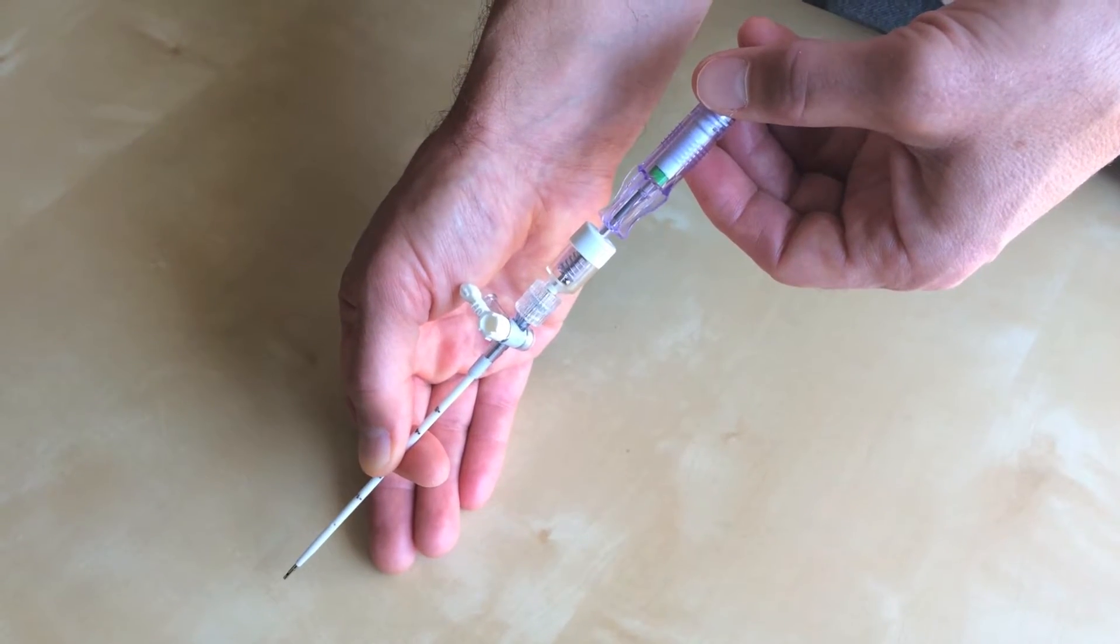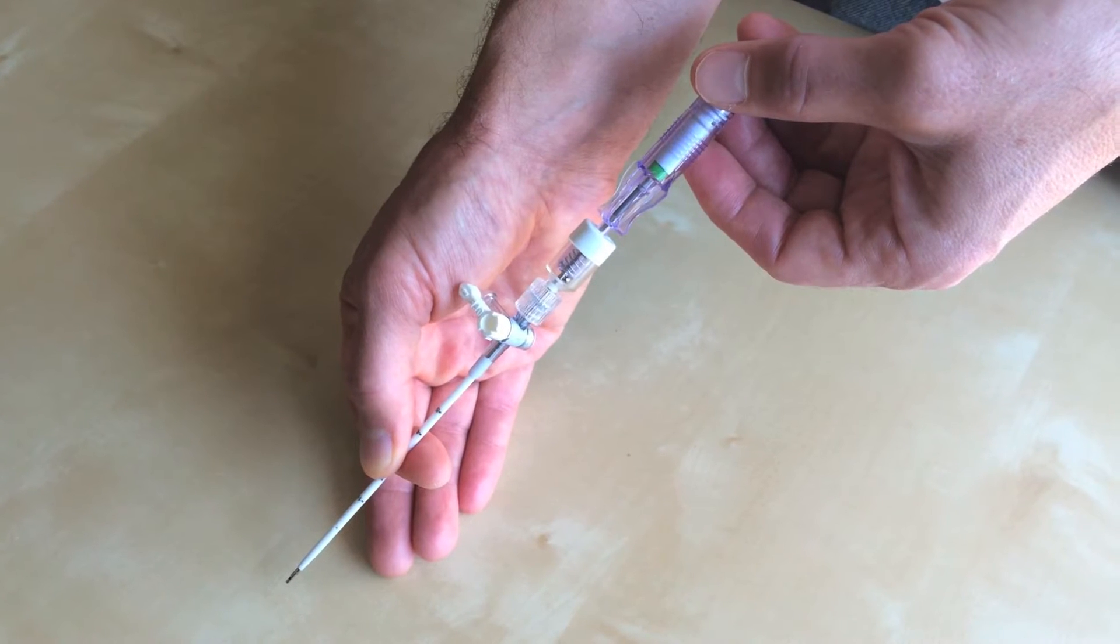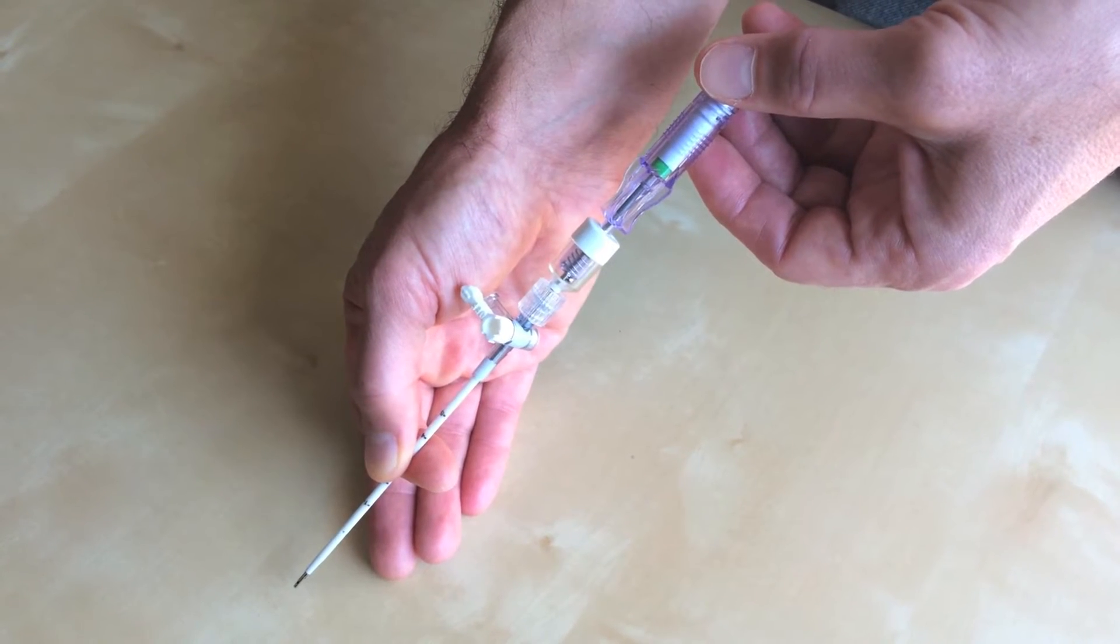The Turcal needle is an 8 French catheter over needle system with a blunt retractable tip for decreasing the risk of bowel injury.